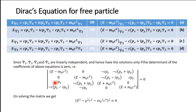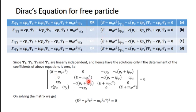Writing the determinant: the coefficient matrix has (E minus m-naught c-squared) on the diagonal for the upper block, with off-diagonal entries such as minus c p-z and minus c(p-x plus iota p-y). Setting the determinant equal to zero and solving gives E-squared minus p-squared c-squared minus m-naught-squared c-to-the-fourth, all squared, equals zero.